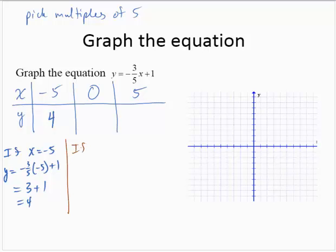If x is 0, y would equal negative 3 fifths of 0 plus 1. That would be 0 plus 1, which is 1.